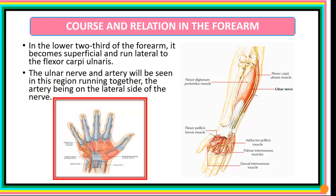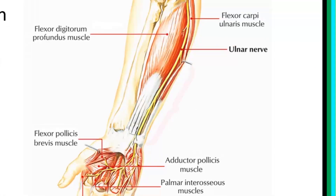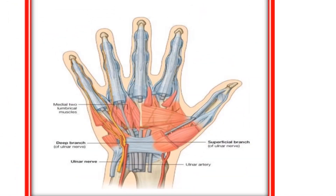In the lower two thirds of the forearm, the nerve runs laterally, moving away from the cover of flexor carpi ulnaris. In this lower region, the nerve runs together with the ulnar artery, with the ulnar nerve lying medial to the ulnar artery.